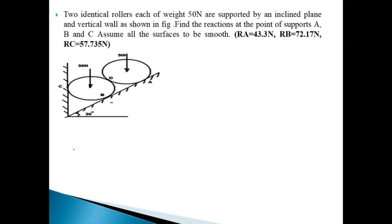Hi, welcome once again. In this video we will see the resultant of two identical rollers which are resting on an inclined plane which makes an angle of 30 degrees with the horizontal, and it also rests along a vertical wall at C. We have to find out the reactions exerted by these two rollers at points A, B, D, and C.